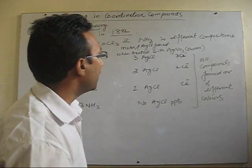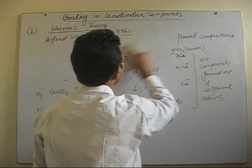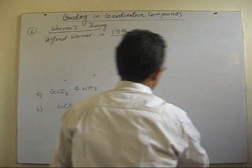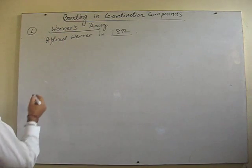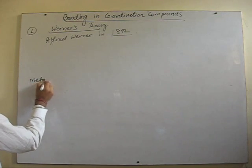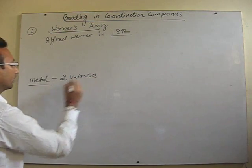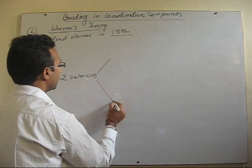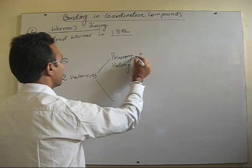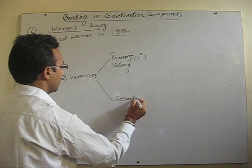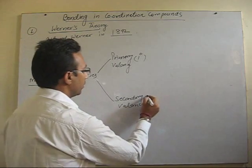Let's discuss Werner's theory briefly. According to Werner, a metal shows two types of valences: one known as primary valence and another known as secondary valence. For example, in an ionic compound like cobalt chloride, cobalt is present in a +3 oxidation state, which is satisfied by 3 Cl⁻ ions. In this compound, it shows only one type of valence — primary valence.